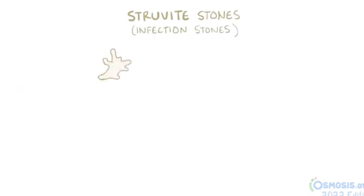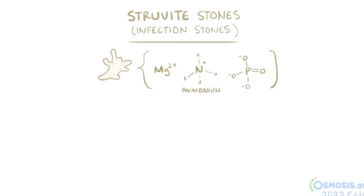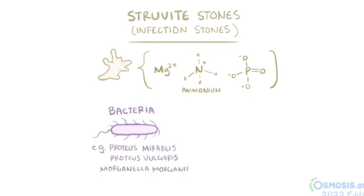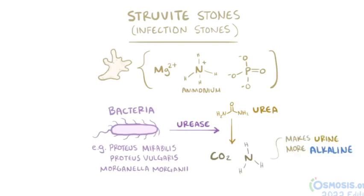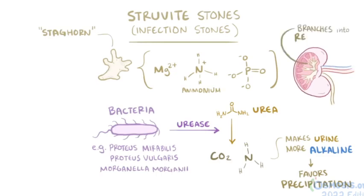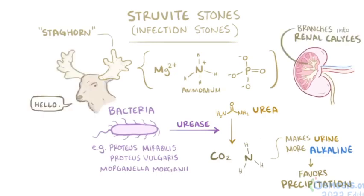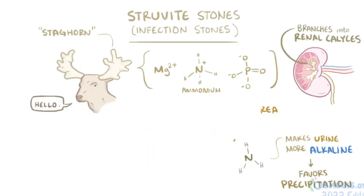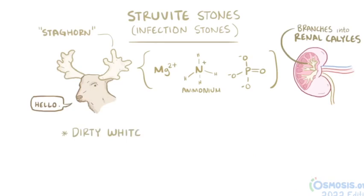A fourth type are struvite stones, sometimes called infection stones, which are a composite mix of magnesium, ammonium, and phosphate. These form when bacteria like Proteus mirabilis, Proteus vulgaris, or Morganella morganii use the enzyme urease to split urea into carbon dioxide and ammonia. The ammonia makes the urine more alkaline and favors precipitation of magnesium, ammonium, and phosphate into jagged crystals called staghorns because they often branch into several of the renal calyces and look like the horns of a staghorn deer. Like the calcium phosphate stones, struvite stones are dirty white and radio-opaque under an x-ray.